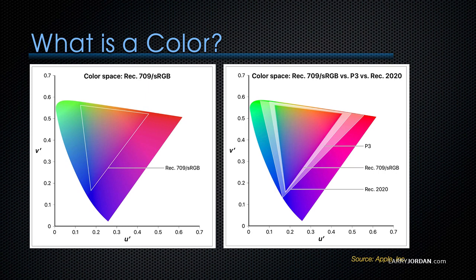The color area in the image on the left represents all the colors the eye can see. The triangle in the center represents the colors that can be represented in REC 709, or the sRGB color space. As we expand beyond REC 709 to include more of the colors that the eye can see, we open up a couple more color spaces that the image on the right shows. The inner rectangle is REC 709.